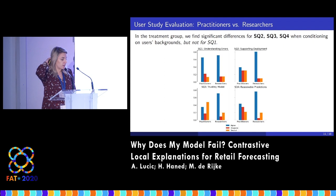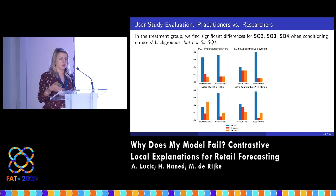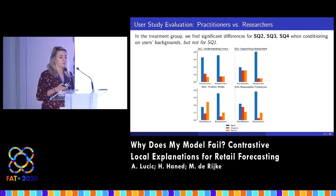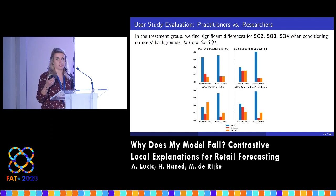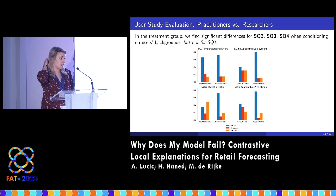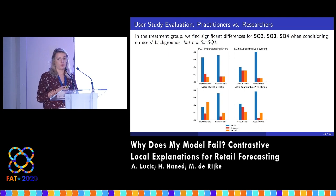We also had both practitioners — people who work in industry — and researchers from academia in both groups, and we wanted to see if our results hold when conditioning on the user's background. We find that they do for the first question: both practitioners and researchers overwhelmingly say our explanations help them understand errors and model predictions. However, we see a difference in distributions for the other three questions, showing that researchers are more likely to support deployment, trust the model, and say the model has reasonable predictions. This tells us our explanations seem to perform better for people in the research community.